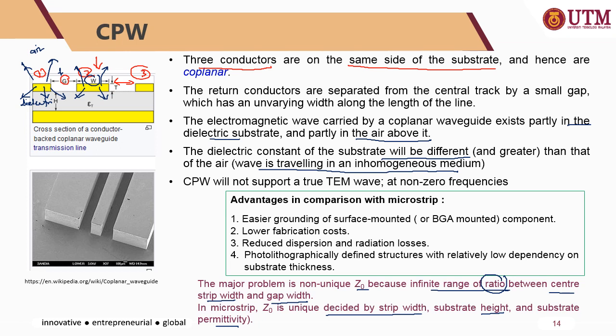The advantages of CPW compared to microstrip include easier grounding or surface mounting, lower fabrication costs, reduced dispersion and radiation losses, and photolithographically defined structures with relatively low dependency on substrate thickness. Since the Z-naught of microstrip is decided by the strip width, substrate height, and permittivity, CPW allows a more efficient structure with low dependency on substrate thickness.